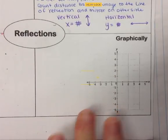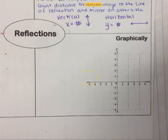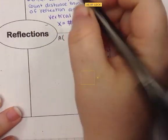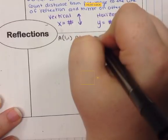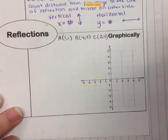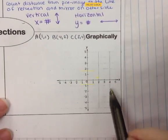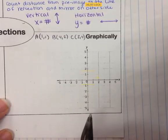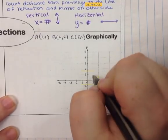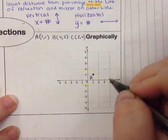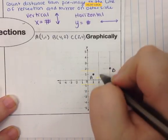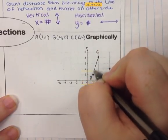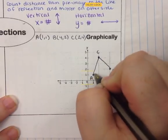For a graphical representation, I'll give the pre-image coordinates: A is at (1, 1), B is at (4, 2), and C is at (2, 4). I'm going to graph this on the coordinate plane. A is at (1, 1) — label it A. B is at (4, 2). C is at (2, 4). Make sure you label the points and connect them. These are A, B, and C — not prime yet.